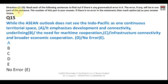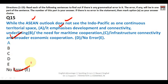Question fifteen: 'While the ASEAN outlook doesn't see the Indo-Pacific as one continuous territorial space, it emphasizes development in connectivity, underlying the need for maritime cooperation, infrastructure connectivity, and broader economic cooperation.' ASEAN is a group treated as a singular entity so 'doesn't' is correct. The sentence is correct and the answer is E — no error.